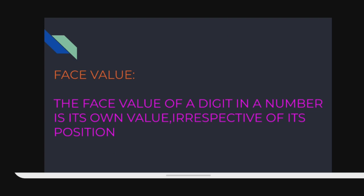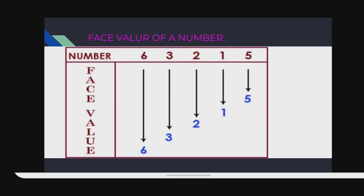The face value of a digit in a number is its own value irrespective of its position. Face value is nothing but its actual value. For example, the number 63215: face value of 5 is 5, face value of 1 is 1, face value of 2 is 2, face value of 3 is 3, face value of 6 is 6.